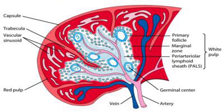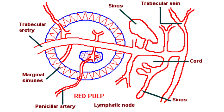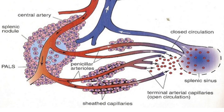The red pulp is composed of sinuses and splenic cords, also called cords of Billroth. The reticular artery gives rise to reticular branches which open into cords and sinuses, where particles are phagocytosed. Two types of circulation exist in the spleen. In open circulation, blood empties from the sheathed capillaries into the splenic cords and then enters the sinuses through slits in the wall. In closed circulation, blood empties from vessels of the white pulp into sheathed capillaries in the red pulp and then directly to the sinuses.